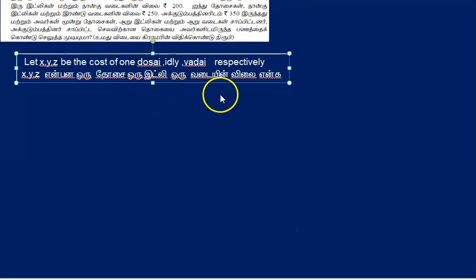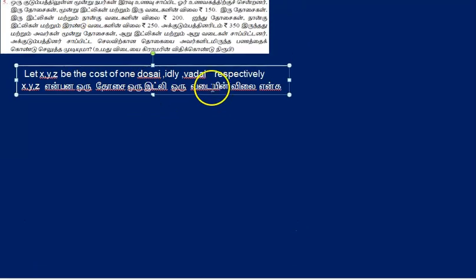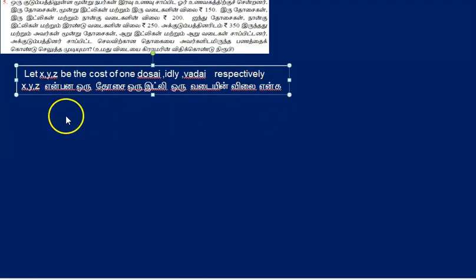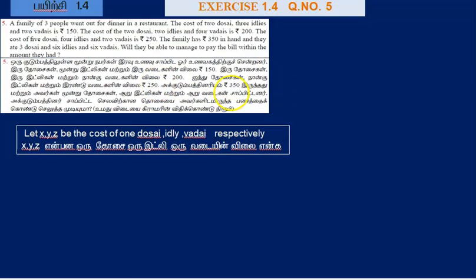There are 1 dosa, 1 idli, 1 vada — denoted as x, y, z. We use 3 equations to solve the problem using Cramer's rule to find the xyz values.